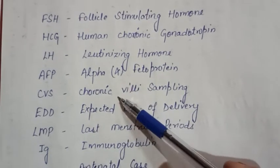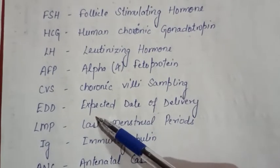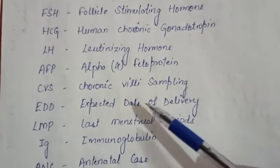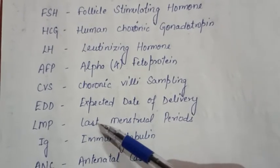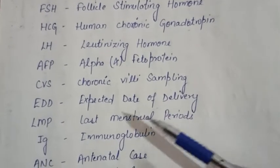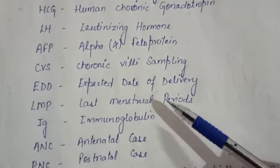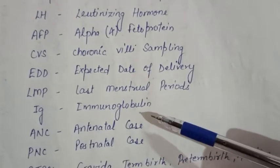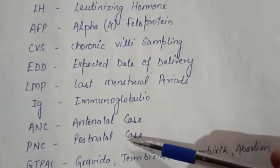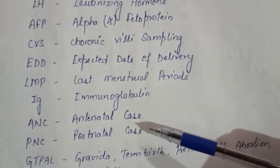CVS is chorionic villi sampling. EDD is expected date of delivery. LMP is last menstrual period. IG is immunoglobin. ANC is antenatal case. PNC is postnatal case.